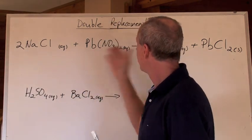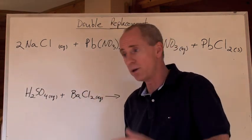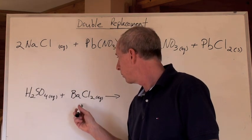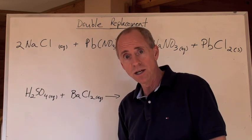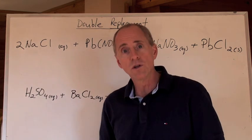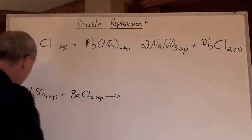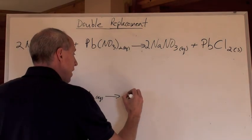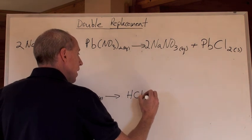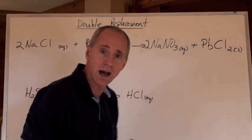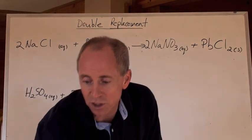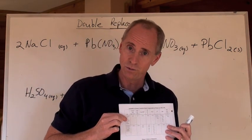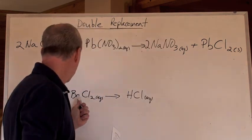Now that is a double replacement reaction, another example of that. Here is sulfuric acid, H2SO4, and it's reacting with barium chloride in solution, BaCl2. So you do the double replacement. The H, which is a positive one, goes with the Cl, which is a negative one. So you get HCl aqueous. Now by the way, that's going to be aqueous. I know that because hydrogen, H positive, doesn't precipitate out with anything.